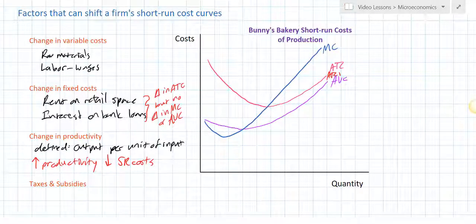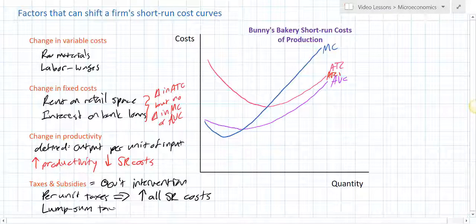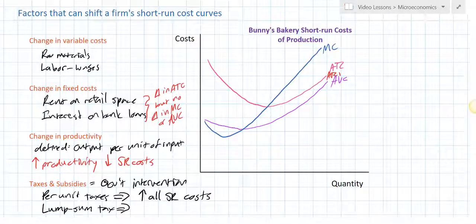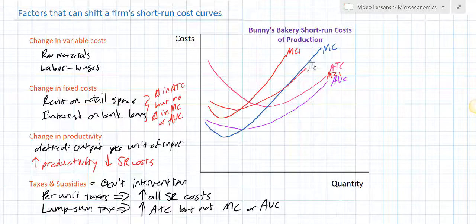One more factor that can shift a firm's short-run cost of production is government intervention. If the government chooses to tax the production of a good, it can levy two types of taxes. A per unit tax is going to increase all the short-run costs of production, or it could levy what we call a lump sum tax. A lump sum tax is basically a fee or a fine imposed on a producer — it is not paid for every unit of output produced; rather it is one fixed amount that the firm has to pay the government. The keyword there is fixed amount. This is going to shift the ATC but not the marginal cost or the average variable cost. A per unit tax will shift up all three curves: marginal cost, average variable cost, and average total cost will all shift up.